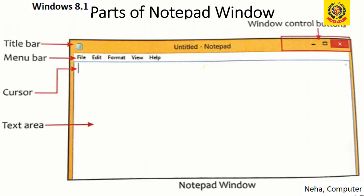Parts of the Notepad window. First of all there is a window control button at the top right corner — that is minimize, maximize, and the close button. Then comes the title bar where we can see the name of the file which we have saved. Next, the menu bar where we can see File, Edit, Format, View, and Help tabs. Next is the cursor, which is a blinking line from where we start typing, and finally the text area — this whole blank area is called the text area where we type the text.